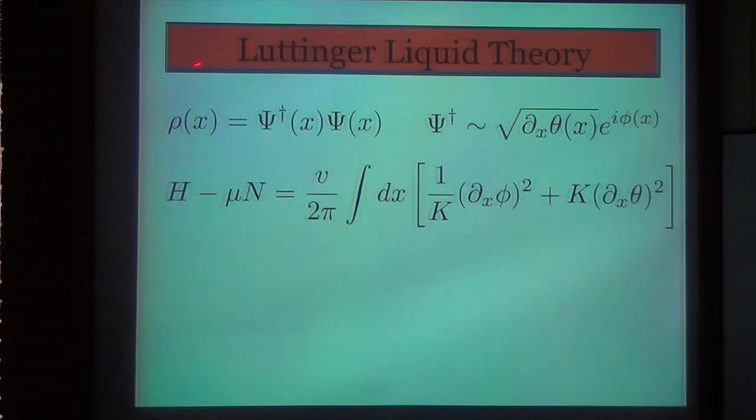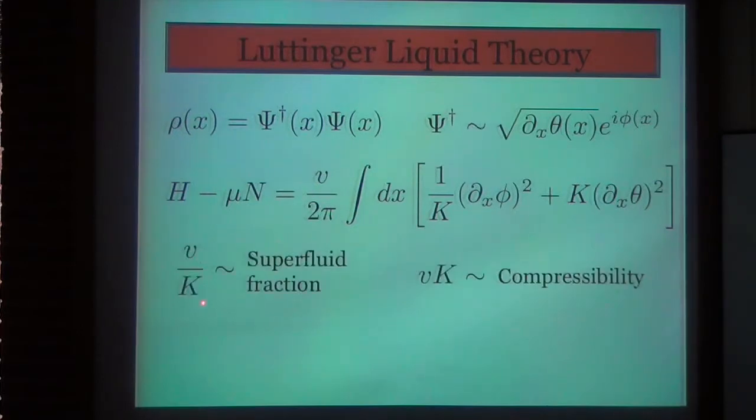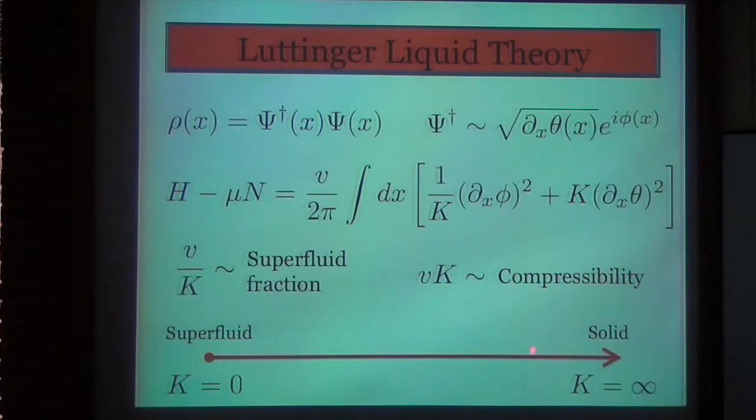All of these interesting behaviors can be described universally by something called Luttinger liquid theory, which is very connected to my research. It's formulated using these bosonic field operators. Rho of x is the particle density at position x. These field operators create and annihilate a boson at position x. Here's the form of the field operator. Phi is a phase, and theta of x is a parameter whose derivative is actually the density. And so this is the Hamiltonian of the Luttinger liquid theory. K and V are phenomenological parameters, often referred to as the Luttinger liquid parameters, that can be connected to physically observable quantities such as the superfluid fraction here, which is V over K, and compressibility, which is V times K.